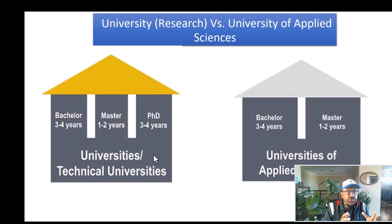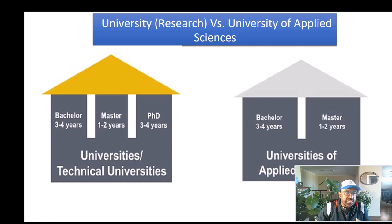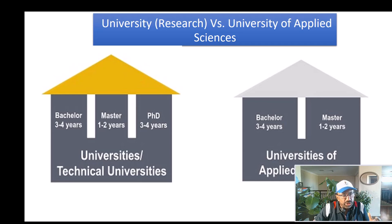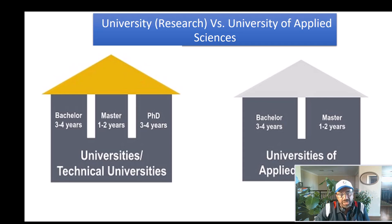In a normal university, a bachelor's program is often three to four years, master's program is between one to two years, and a doctoral program about three to four years. This structure applies to a typical university or any kind of technical university. In a University of Applied Sciences, the bachelor's program is similarly three to four years, master's is again one to two years, but usually UAS does not offer a doctoral program.